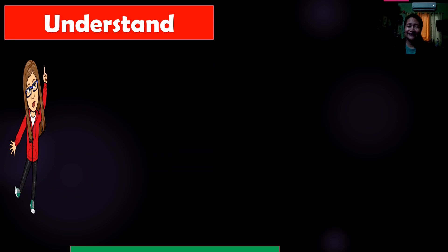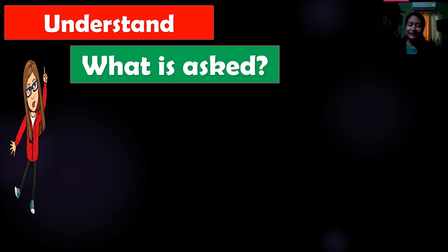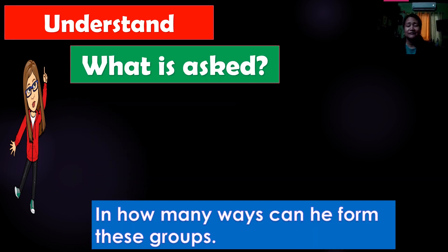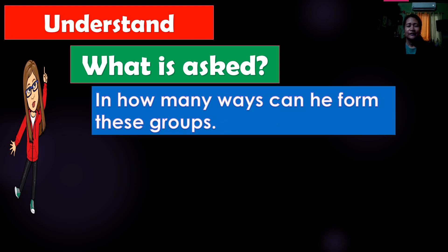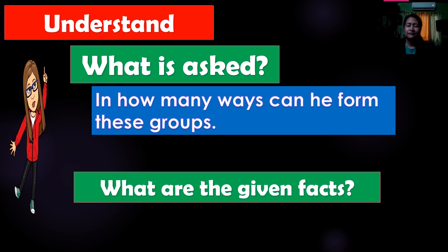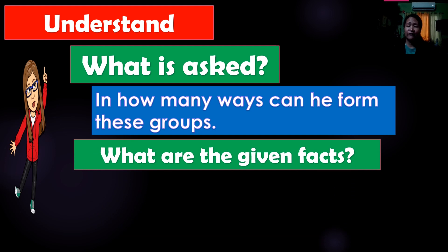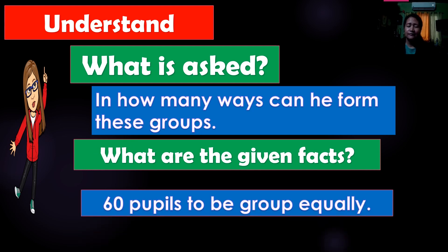So we have understand. Under understand, we have what is asked. So what is asked in the problem? In how many ways can he form these groups? So what are the given facts? 60 pupils to be grouped equally.